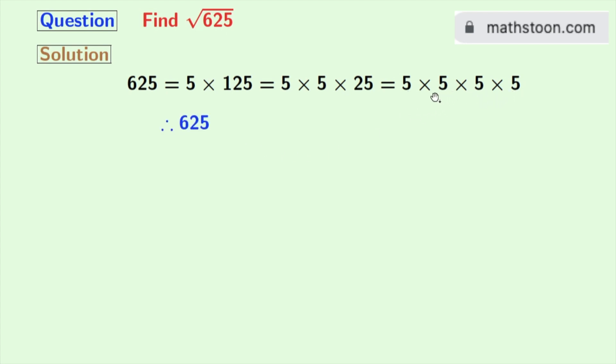Now multiplying two 5s, we get 25, and another two 5s give us 25 again.